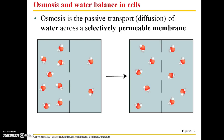Osmosis is a type of passive transport and it's just diffusion of water. So when you hear osmosis, you should think water. It's the passive transport of water across a selectively permeable membrane. These dashed lines here represent that biological membrane — they're going to allow these water molecules through. And once a certain amount of time has passed, those water molecules are going to be in equilibrium on either side of that membrane.